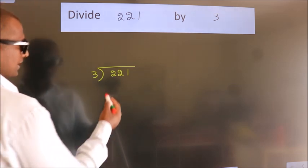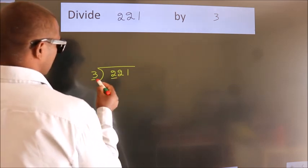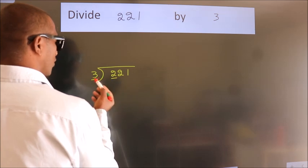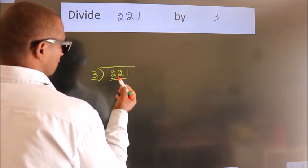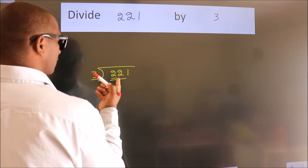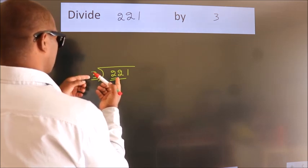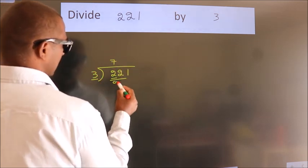Next, here we have 2, here 3. 2 is smaller than 3, so we should take 2 numbers: 22. A number close to 22 in the 3 table is 3 times 7, which is 21.